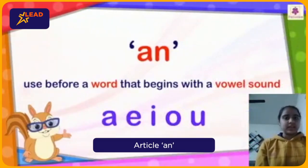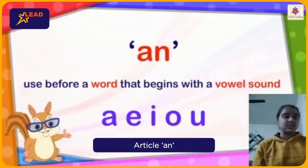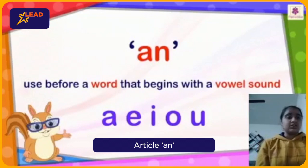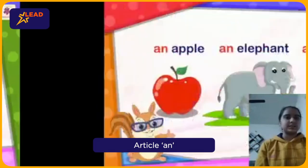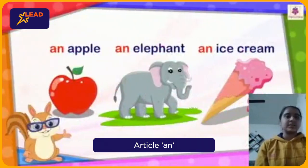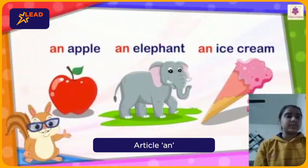Now let us learn about An. An is used before a word that begins with a vowel sound. As you know, vowels are A, E, I, O, and U. Let us see some examples: an elephant, an apple, an ice cream, an orange, etc.